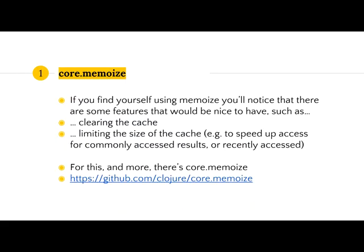If you find yourself using memoize a lot, you'll notice features you'd probably like — such as being able to clear the cache when your data suddenly changes, limit the size of the cache if memory is a concern, or speed up access for commonly or recently used results. For all of that, there's a great library called core.memoize. It helps manage all of that kind of stuff and I really recommend you take a look at the code to understand how it works.